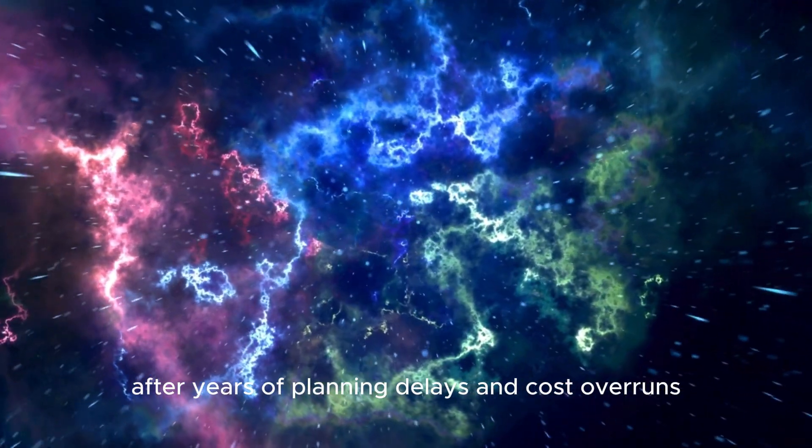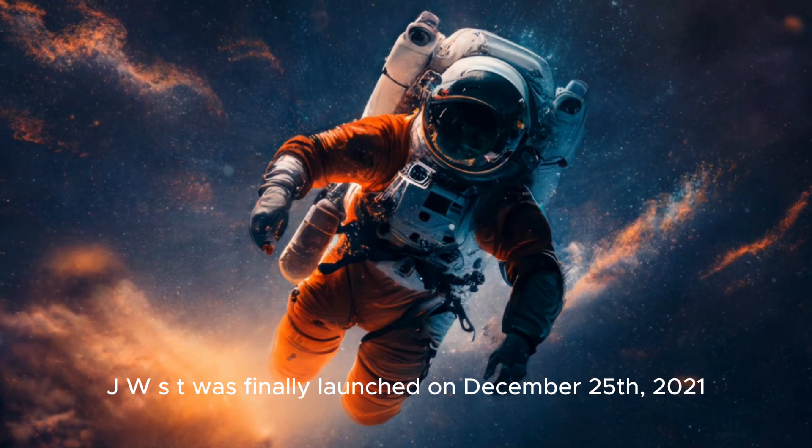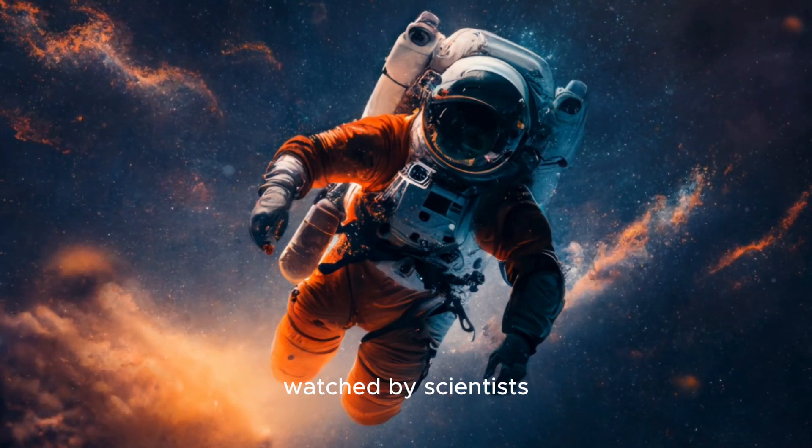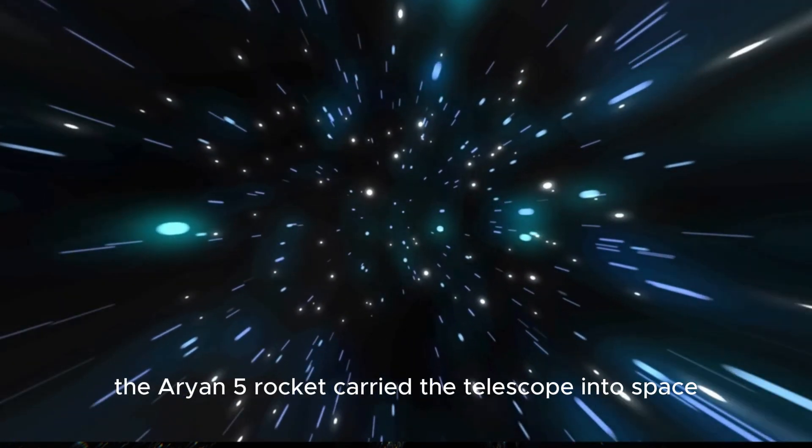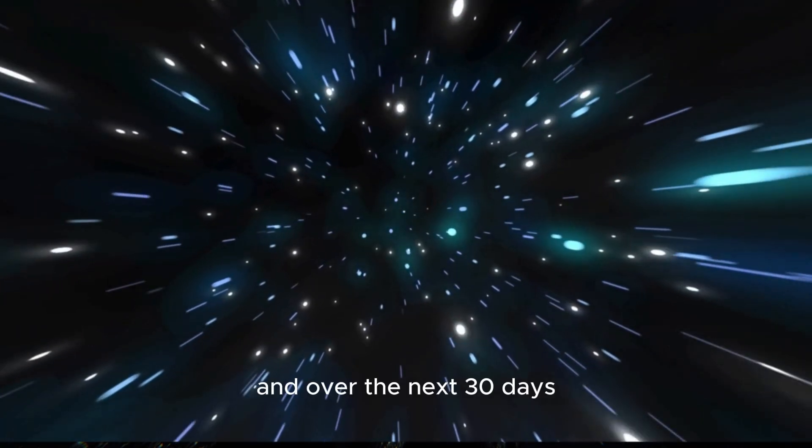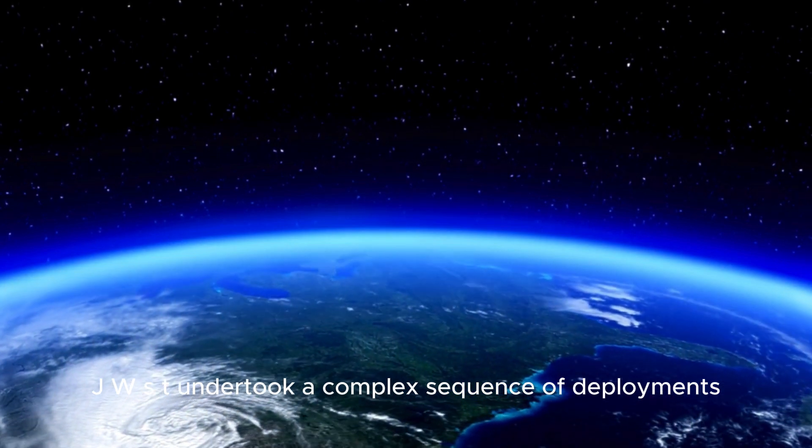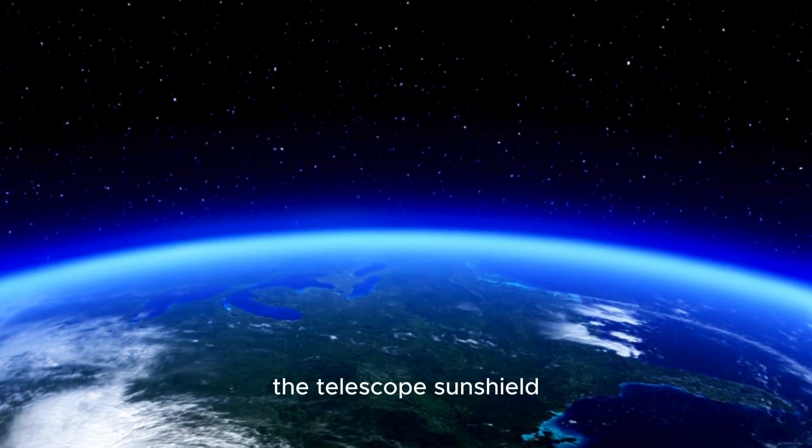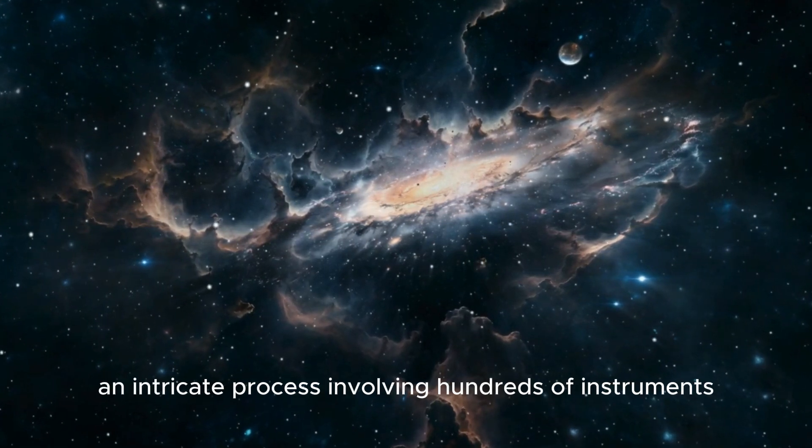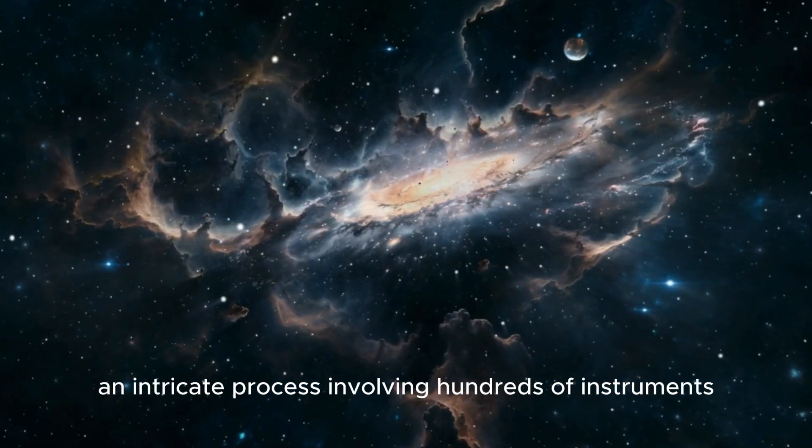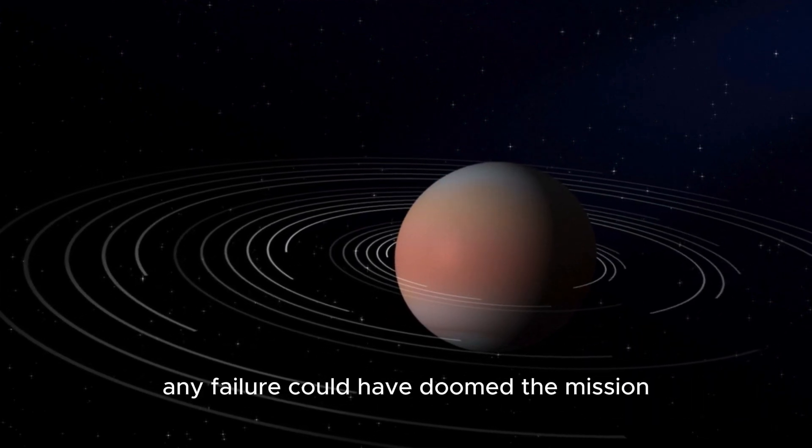After years of planning, delays, and cost overruns, JWST was finally launched on December 25, 2021, a landmark moment watched by scientists and space enthusiasts around the world. The Ariane 5 rocket carried the telescope into space, and over the next 30 days, JWST undertook a complex sequence of deployments. The telescope's sunshield was the first major component to deploy, an intricate process involving hundreds of instruments and thousands of parts working in perfect harmony. Any failure could have doomed the mission.